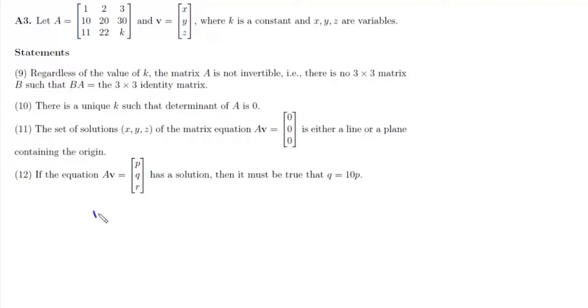Looking at the determinant of A, we have 1, 2, 3 in the first row, 10, 20, 30 in the second row, and 11, 22, k in the third row. If we write R2 as R2 minus 10R1, we get 0, 0, 0, which means the value of determinant A is 0. Therefore, this matrix A is not invertible.